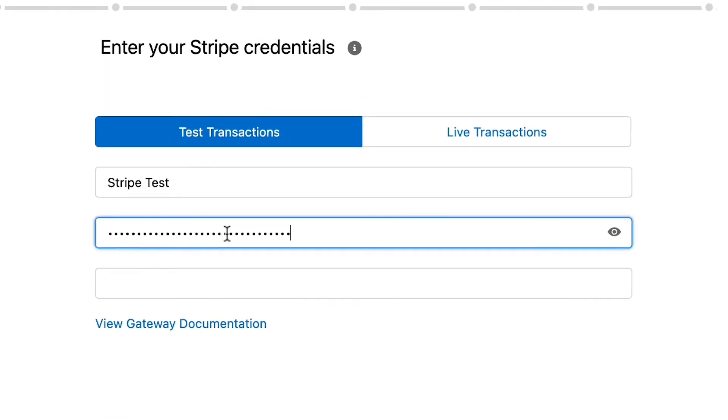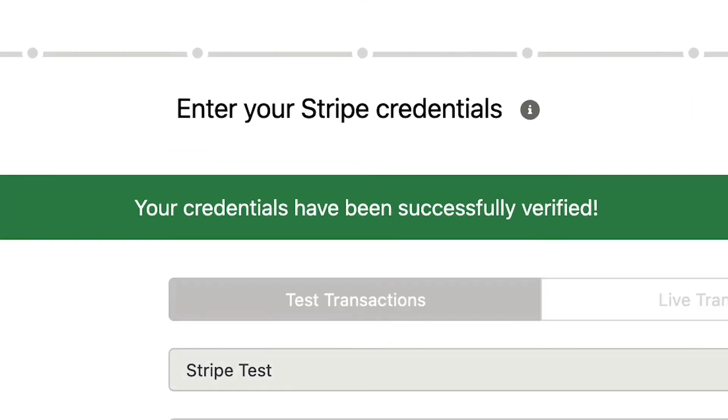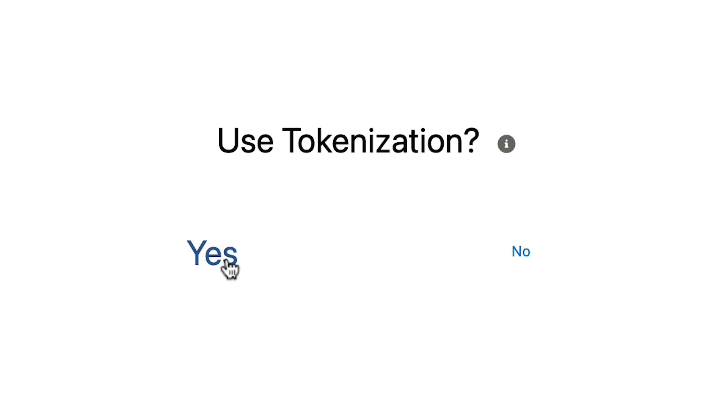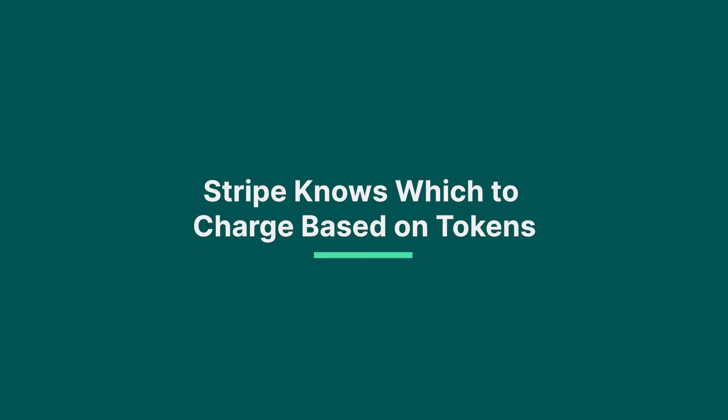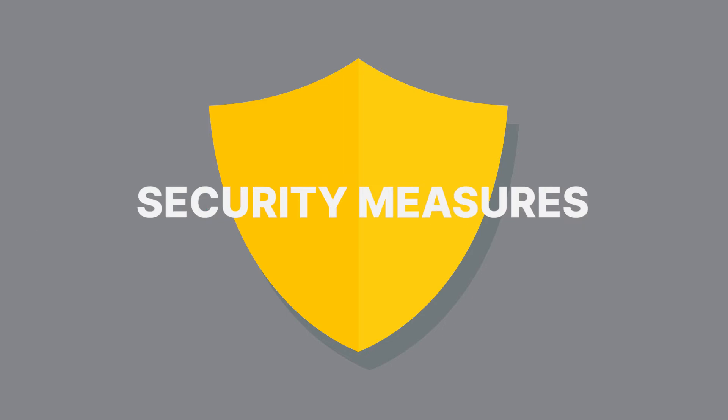Enter the secret key which you copied from Stripe and then click continue. You can also change the name of the gateway to any name you prefer. You will see a green message indicating that the sign-in was successful. Next, select yes or no to whether you would like to use tokenization. We recommend yes. Tokenization allows you to store tokens instead of credit card numbers and bank account numbers in Salesforce, and process subsequent charges to those payment sources because Stripe saves the account numbers and knows which to charge based on the token. This tokenization is one of the security measures that Chargent and Salesforce have in place to keep your payments secure.